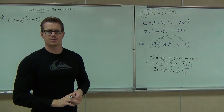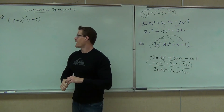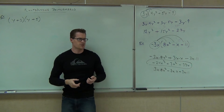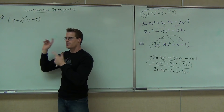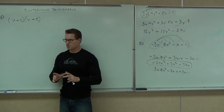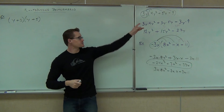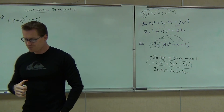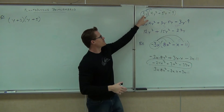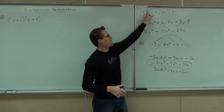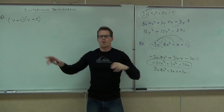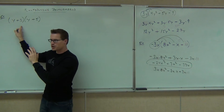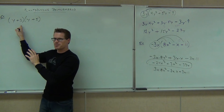What if instead of just one term I had something like two terms times two terms? How many terms are here? Two. How many terms here? Two — so you have a different story. We need to discover how you do that. The idea was: for every term inside the parentheses, multiply it by the term outside. Now instead of just one term I've got two terms, so multiply every term in the first polynomial times every term in the second polynomial.